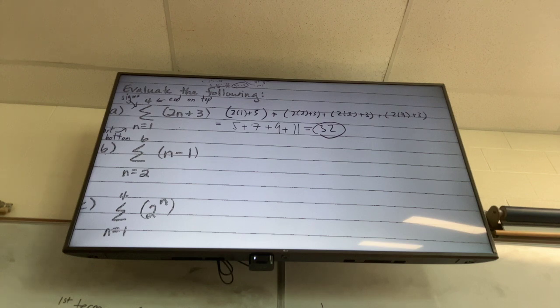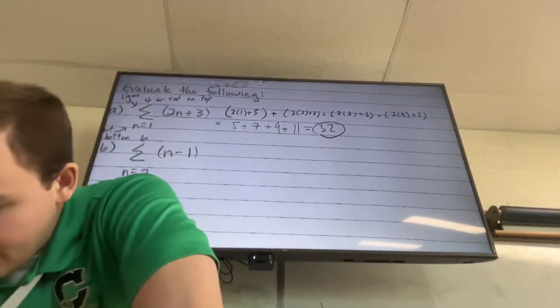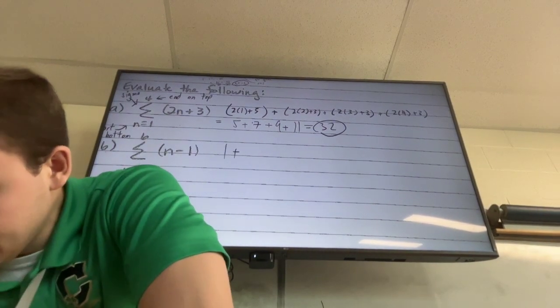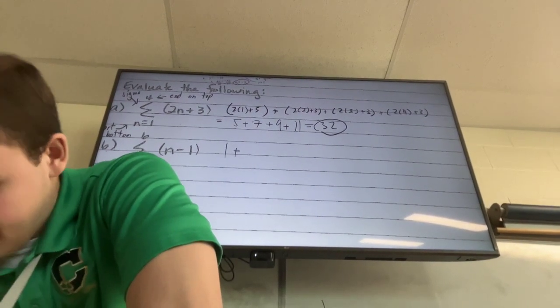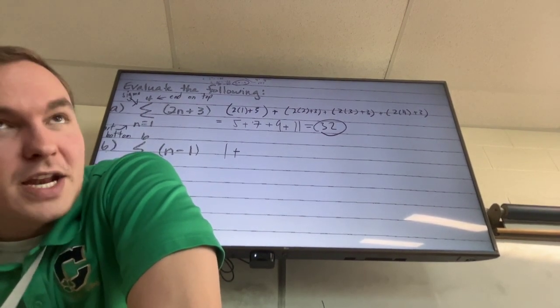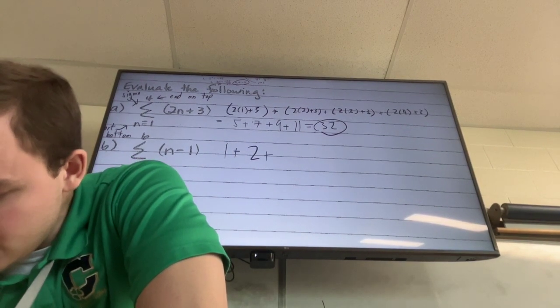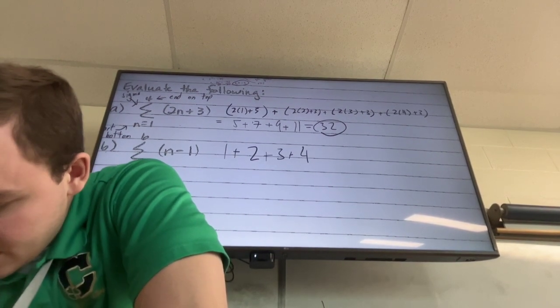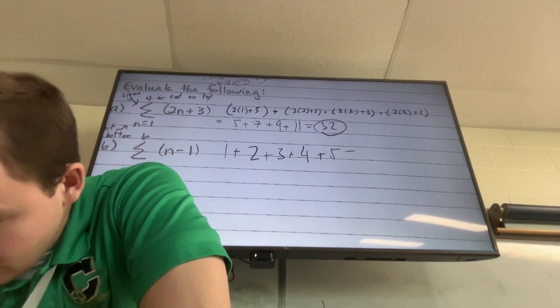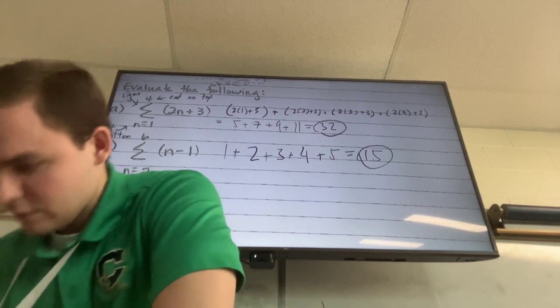What will that next one give me then? What will my first term be? 2 minus 1, right? It will be the first term. So 1, then a plus. What will that second term be? If I plug in 3, what's 3 minus 1? 2. So it's going to be 1 plus 2 plus 3 plus 4, plus 5, which is 15.